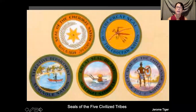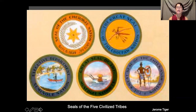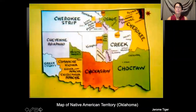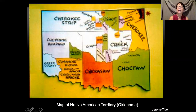These are the seals of the five civilized tribes. When I say "civilized," it's what the white settlers referred to them as, because these tribes were more like the white settlers — they had schools, governments, churches, and a law enforcement typical of white settlers' communities. This is a picture of what's now Oklahoma, the Oklahoma Territory, and this part right here is where Jerome Tiger's relatives settled — where the Creek Native Americans were.